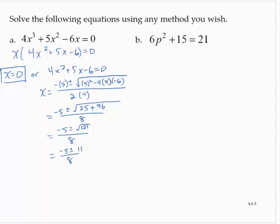Breaking that up into two values. x = (-5 - 11)/8. That's -16/8, which is -2. x = (-5 + 11)/8. -5 + 11 is 6. 6/8 is 3/4. So we have three solutions: -2, 0, and 3/4.